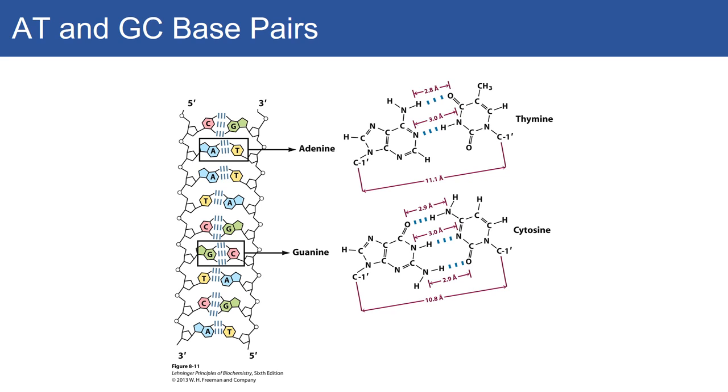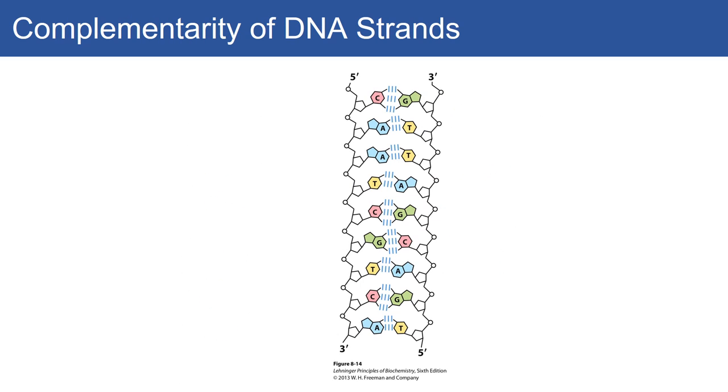There are base stacking interactions that exist. DNA comes in complementary strands—two different strands. This is important for replication and transcription. The complementary strands provide important opportunities for quick replication as well as proofreading.